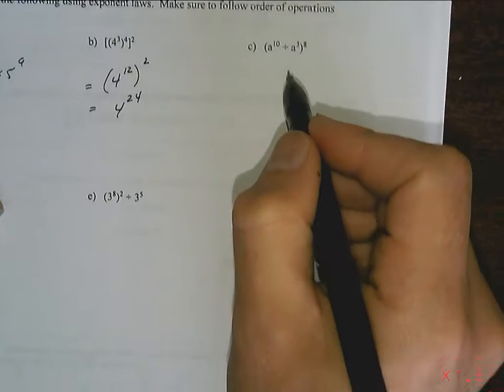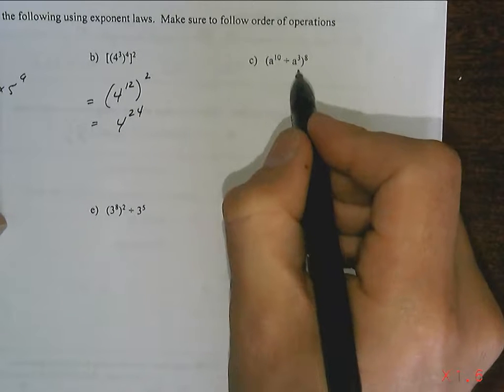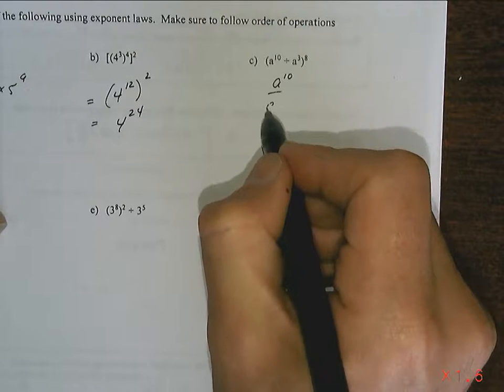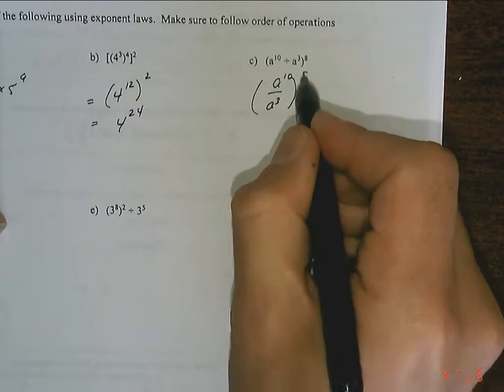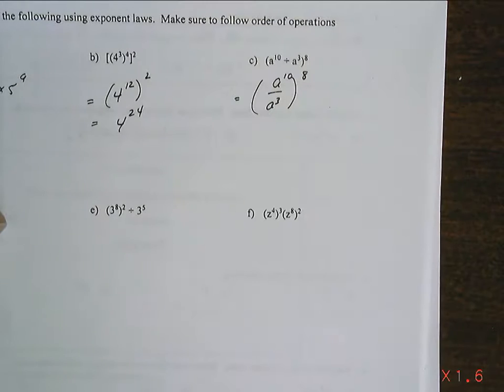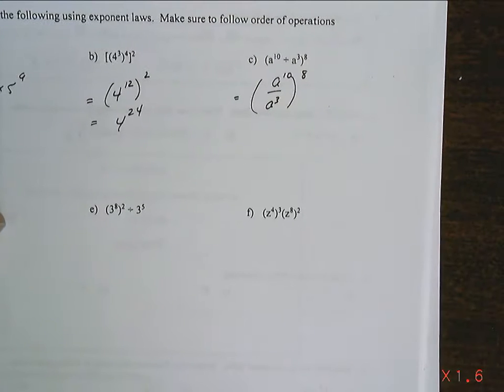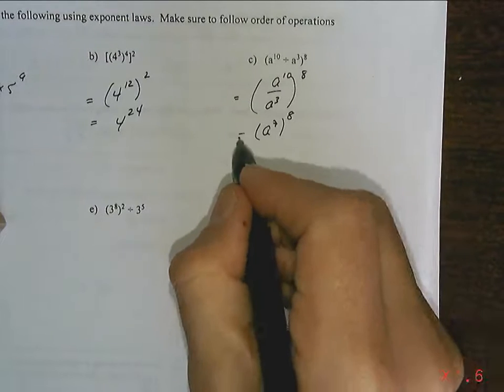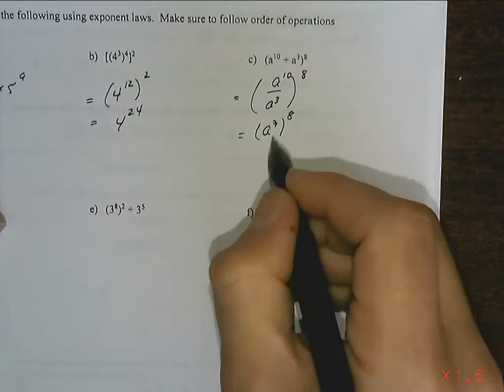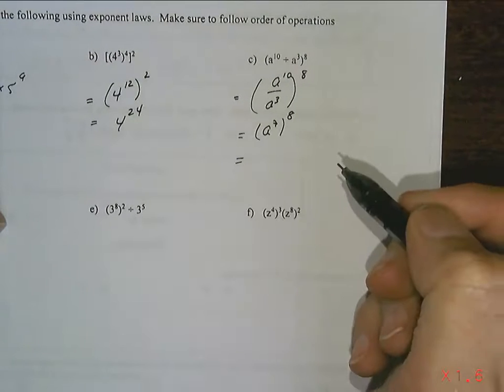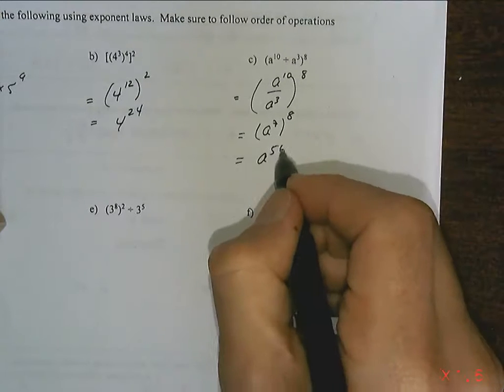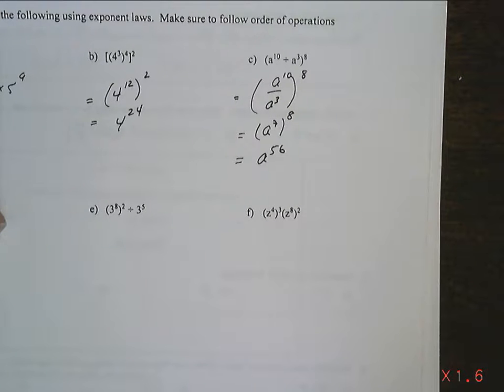This one. I would do what's inside the brackets first and keep the numbers small. So, I've actually got 8 to the 10 over 8 to the 3 all to the 8. So, I look at that and I'm going to play Fruit Ninja. That's going to be 8 to the 7 still to the 8. So, now that's going to be 7 times 8. And I don't know my times tables. 56. 8 to the 56. And that would be your final answer.